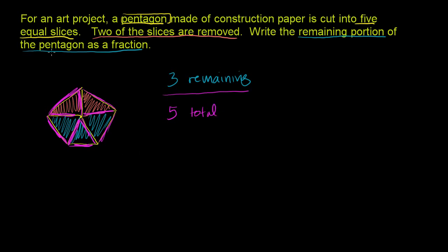So you could say that 3 fifths of the pentagon remain. Or you could say 2 fifths were removed. That's two of the five slices were removed, and then three are remaining, or 3 fifths of the pentagon remain.